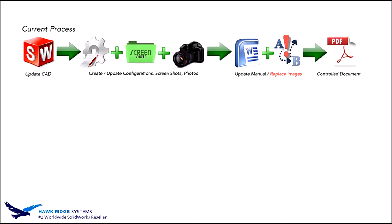Here's a good workflow I'm seeing in most companies. We have SOLIDWORKS at the beginning and a controlled document such as a PDF at the end. Typically, 3D models are developed in SOLIDWORKS, configurations are created, screenshots taken — maybe even photos of the actual product — and those are brought into Word, compiled together, and a PDF or controlled document is saved out.